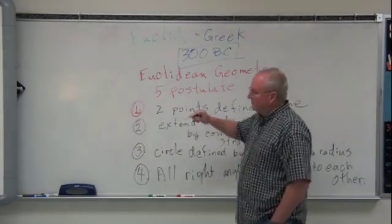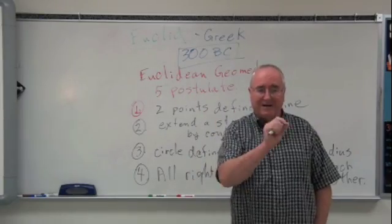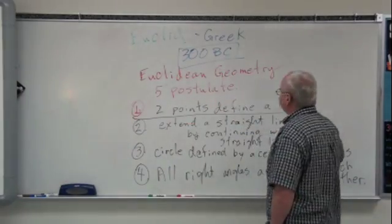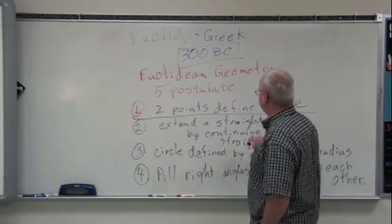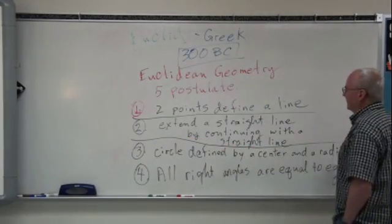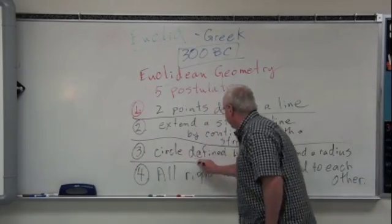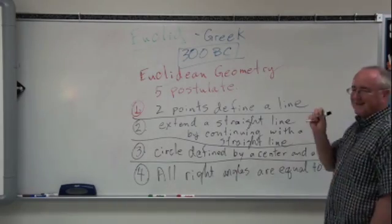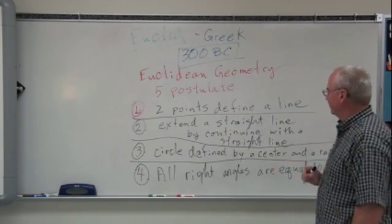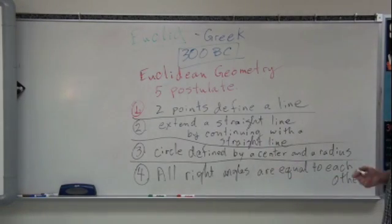Two points define a line. We can draw a line from one point to any other point. Number two, we can extend that straight line by continuing with a straight line. In other words, just simply continuing that line with a straight line, and it can go on forever in both directions. Number three, we can define a circle by describing a center and a radius. And that's what defines a circle. Number four, all right angles are equal to each other. Those are the first four of his postulates.